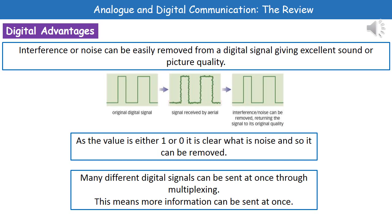That interference would obviously affect the quality of the image received. But because it's a digital signal and it's very clear if it's either on or off, anything else shouldn't be there, which means we can clean it up nice and easily, giving a much better picture quality. Another advantage of digital is that we can carry out multiplexing, which is literally just sending many different digital signals at the same time, so we can send more information at once.